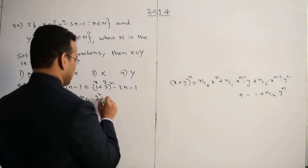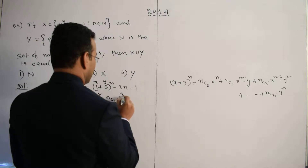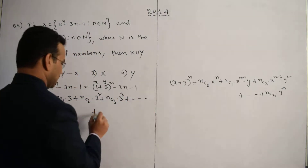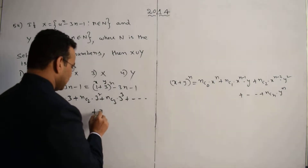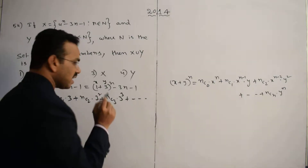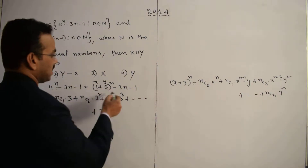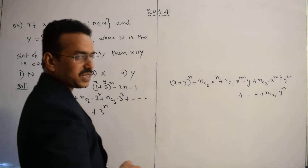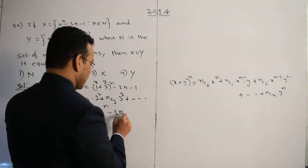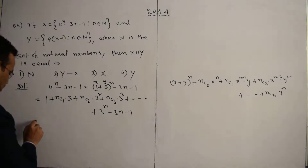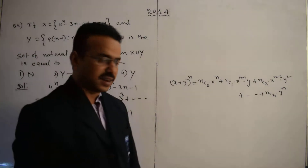Continuing the expansion: plus nC3 times 3^3, plus ... plus nCn times 3^n. Then we subtract the remaining two terms: minus 3n and minus 1.